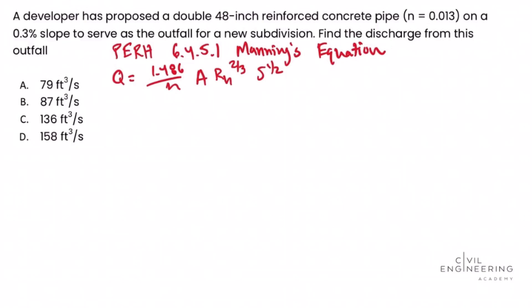Let's look at what these variables mean and what we're given. Q is the discharge — that's what we're solving for. The constant is 1.486 over N, where N is Manning's roughness coefficient, given in the problem as 0.013. That value is based on the material; a concrete pipe has a Manning's roughness coefficient of 0.013.